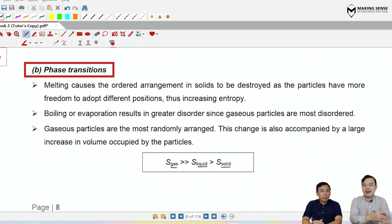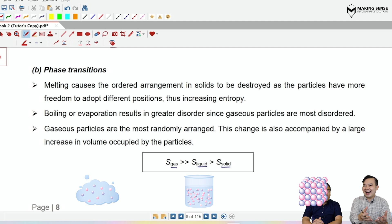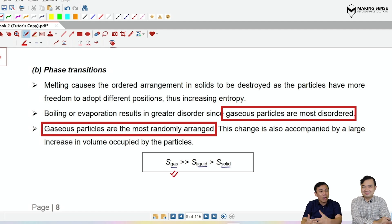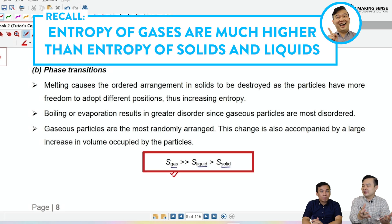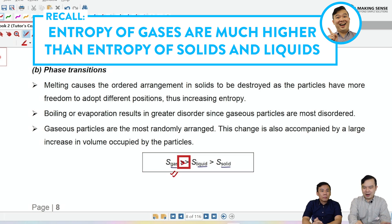The second factor is a phase transition, or what we call a change of state. The three states of matter are gases, liquids, and solids. In terms of entropy, which one has the highest entropy? The gaseous state — the particles are most disordered and most random in their movement, so entropy is highest for gases. For gases, the entropy is much much higher compared to liquids and solids. Gases are really random and really fast, compared to liquids and solids which are in a much more orderly state.